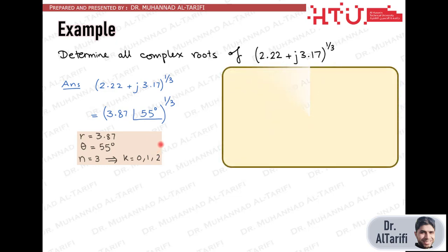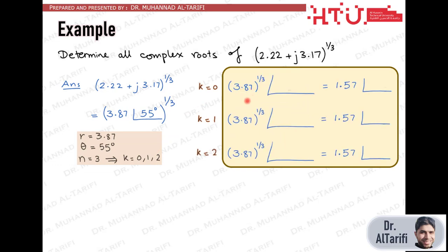All roots will have the same magnitude of 3.87 to the power one third which equals 1.57. But phases would differ for different k values.